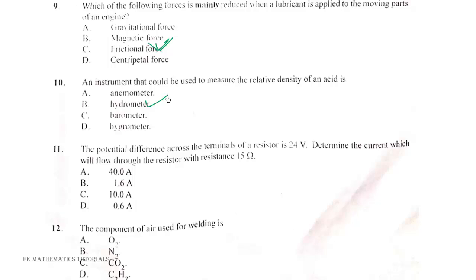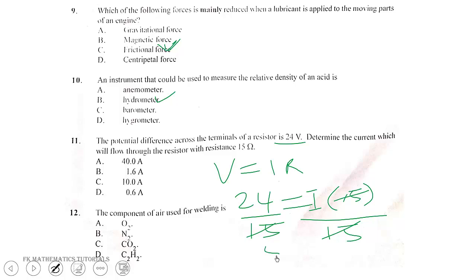Question 11. The potential difference across the terminals of a resistor is 24 V. Determine the current which will flow through the resistor with 15 ohms. Potential difference or voltage is given by I times R. We are given V equals 24 and R equals 15. Divide 24 by 15 to get 8 over 5, which is the same as 16 over 10, which is 1.6 amperes. The correct answer is B.